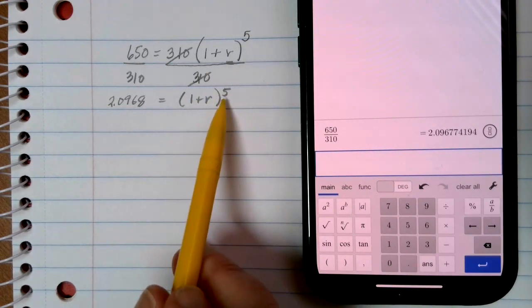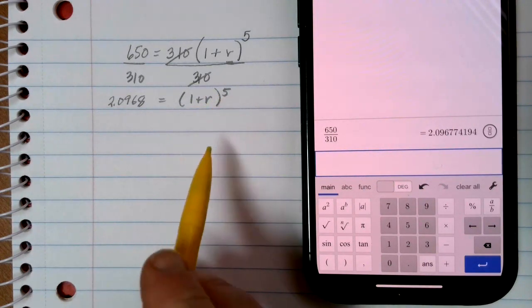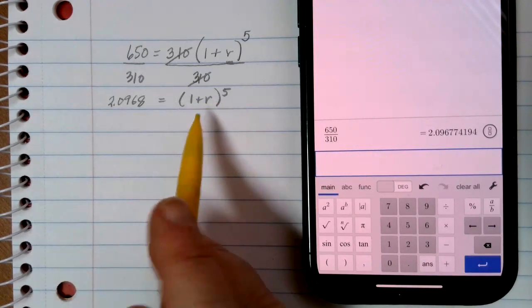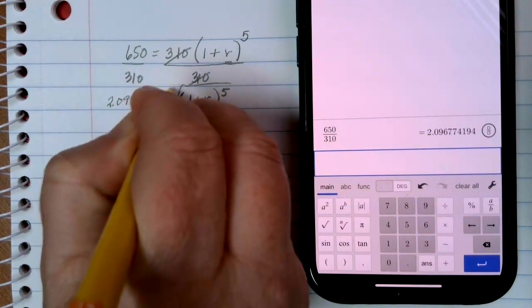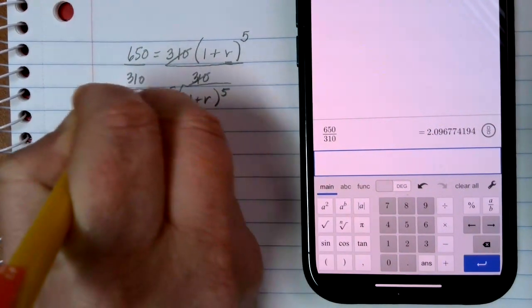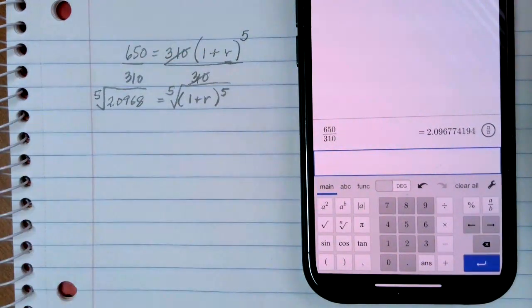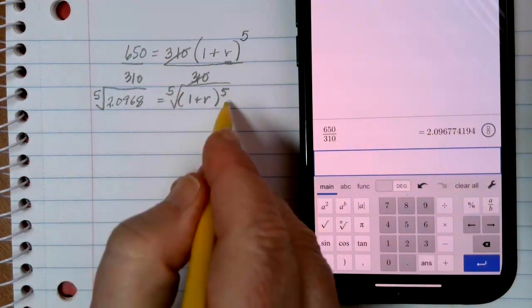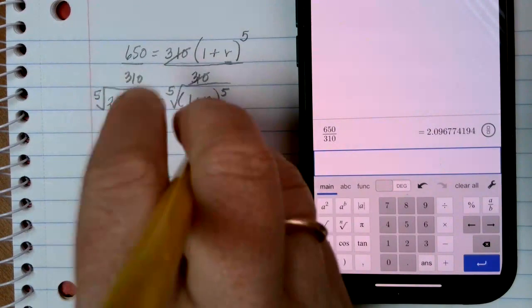To get rid of a 5th exponent, we need to do the opposite operation of an exponent, which is actually taking a root. So if we have a 5th power, we need to take a 5th root of each side to try to solve that equation. On the right-hand side, the 5th root and the 5th power undo each other and leave me just with 1 plus R. I don't even need the parentheses anymore, because that's all that's left.